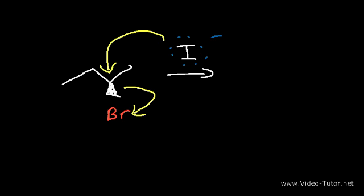The SN2 reaction occurs in a single step — it's a concerted reaction mechanism. All bond-breaking and bond-forming processes occur at the same time. This reaction occurs with inversion of stereochemistry. The bromine was in the front, but now the iodide is in the back, since it attacked the carbon from the back.